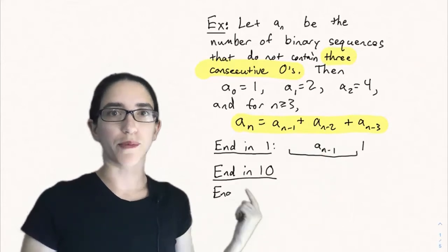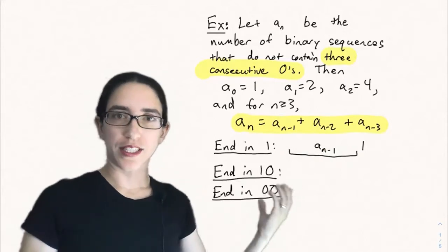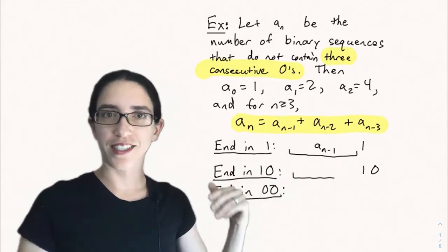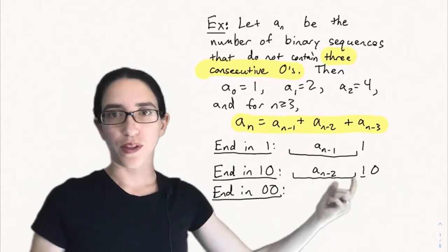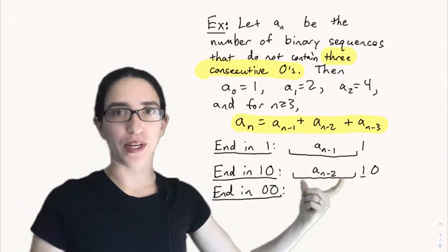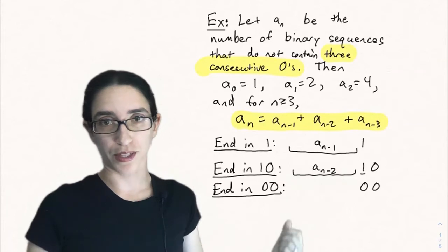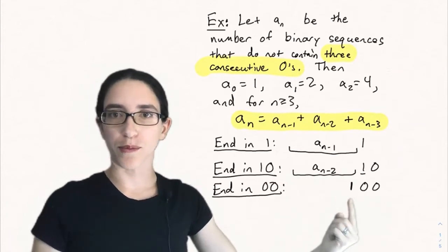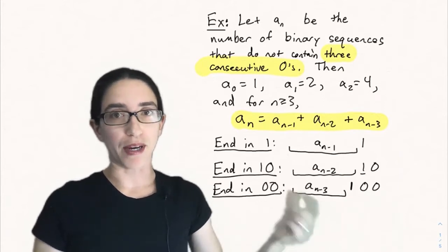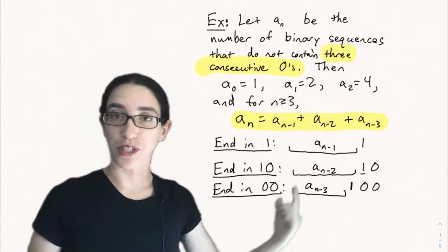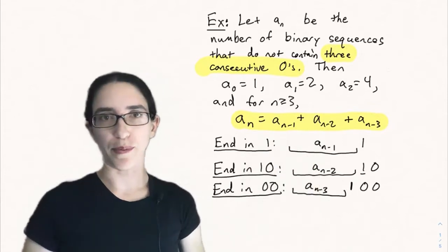If it ends in 0, consider two subcases: either it ends in 1,0 or it ends in 0,0. If it ends in 1,0, that 1 acts as a buffer, and we can put any sequence with no three consecutive zeros of length n-2, giving a_{n-2} possibilities. If it ends in 0,0, the previous entry must be 1 to avoid three consecutive zeros, giving a_{n-3} possibilities. By the addition principle, a_n equals a_{n-1} plus a_{n-2} plus a_{n-3}.